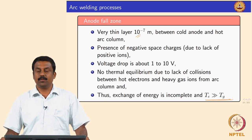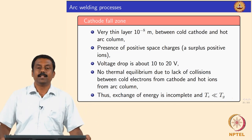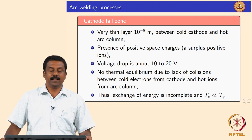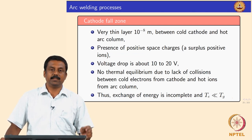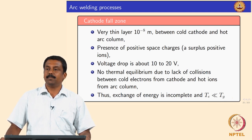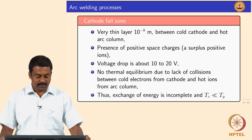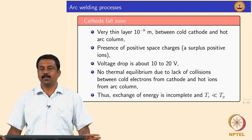The cathode fall zone is extremely important because the cathode acts as an electron emitter. If you do not emit electrons, there is no discharge. Similar to the anode fall zone, the cathode fall zone is also very tiny — about 10⁻⁸ meters — between the arc column and the cold cathode. In the cathode fall zone you have an accumulation of positive ions at the negative terminal, so you have surplus positive ions. The voltage drop is slightly higher than the anode fall zone, about 10 to 15 volts.